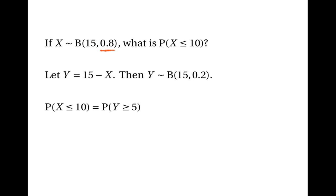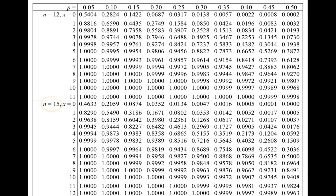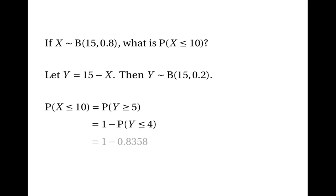The probability that X is less than or equal to 10 — the chance of getting 10 or fewer successes — is the same as the chance that Y is greater than or equal to 5, the chance of 5 or more failures. 10 successes means 5 failures, and fewer than 10 successes means more than 5 failures. The probability that Y is greater than or equal to 5 equals 1 minus the probability that Y is less than or equal to 4. We check where n equals 15, look for the column headed by 0.2, and follow along from 4 to find the probability 0.8358. So the answer is 1 minus 0.8358, which is 0.1642.